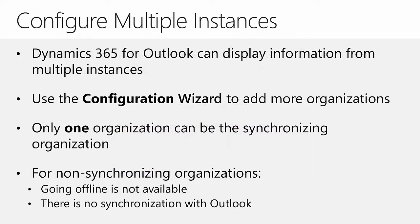The Microsoft Dynamics 365 for Outlook client can be used to connect to multiple Dynamics 365 instances, and even an on-premises organization when leveraging dual user rights. It is important to note that synchronization of Microsoft Outlook items to Dynamics 365, as well as the ability to access Dynamics 365 data offline, will only be available to the main instance, which is the first instance configured on the Dynamics 365 for Outlook configuration wizard.